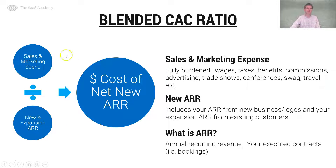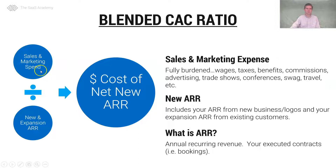The blended CAC ratio formula: in the numerator we have all of our sales and marketing spend. The blended CAC ratio is straightforward to calculate because you don't have to do any allocations between new and existing business. Sales and marketing expense in the numerator is fully burdened — wages, taxes, trade shows, etc.